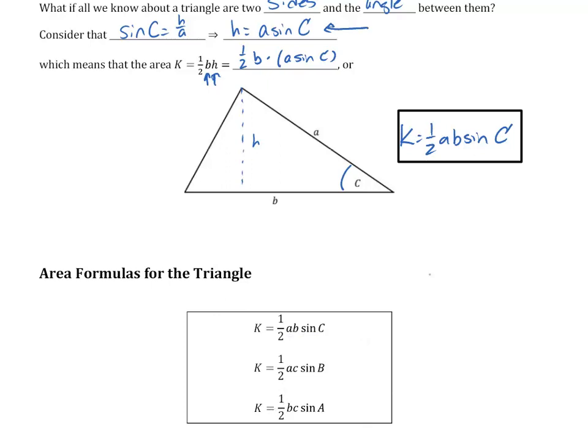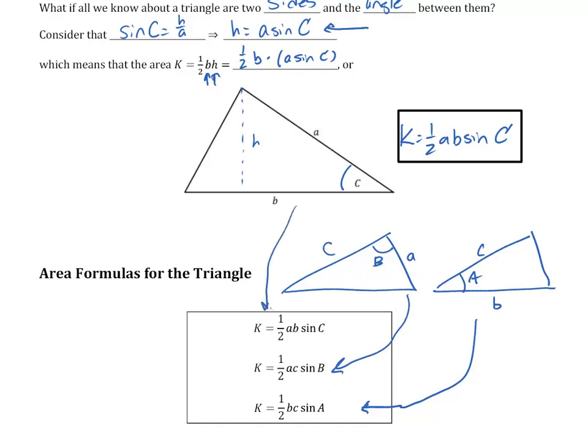If I had the triangle where I knew this side over here happened to be capital A, which makes this side B and this side little C, then that would give us the formula that the area is one-half B times C times sine of the angle between them. If I knew the angle up top, which is capital B, and the two sides on each side of it, would be A and C, that would give me one-half AC sine of B. We have three different area formulas for a triangle based on the two sides we know and the angle in between them.